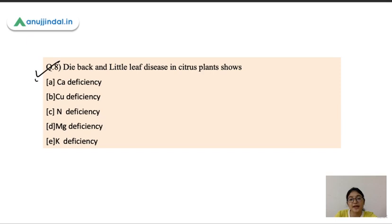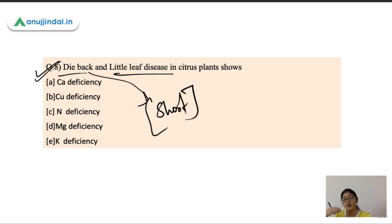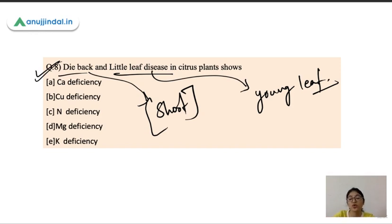Question number 8 is dieback and little leaf disease in citrus plant shows which deficiency? Calcium deficiency, copper deficiency, nitrogen, magnesium or potassium deficiency. This is called dieback in citrus plant. So the shoot starts drying, it starts to dieback and young leaves show necrosis with loss of color and brown spots will be seen in young leaves. These diseases are mainly due to the copper deficiency. So because of copper deficiency these diseases can be seen in citrus plants.